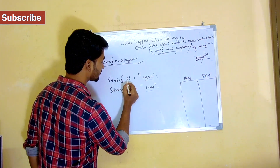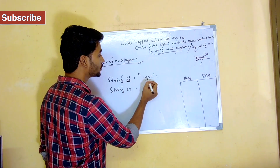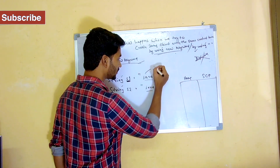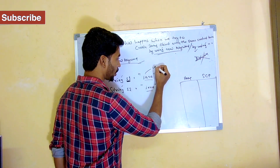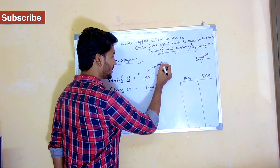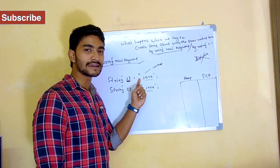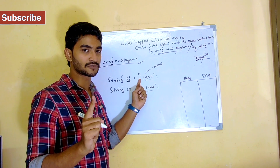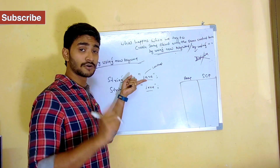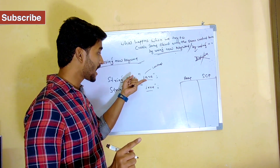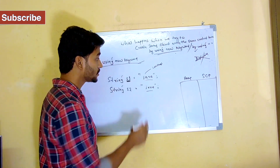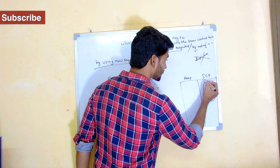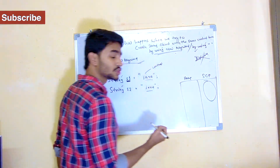S1 has a value of 'Java', and 'Java' is a constant. Am I creating it using the new keyword? No. So there's no runtime operation. It's a constant, so JVM will create an object inside the string constant pool.